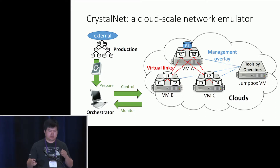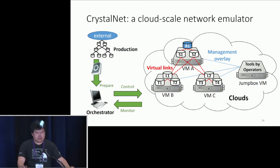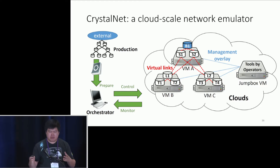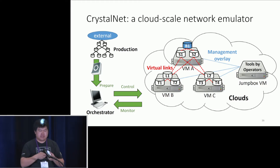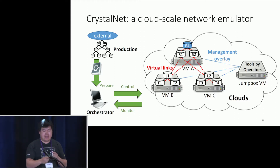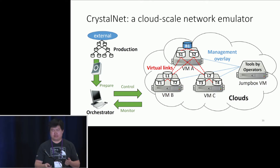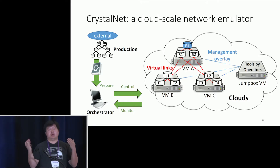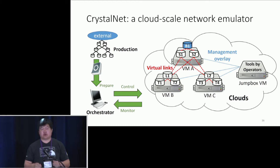This is the architecture of CrystalNet. At the center is an orchestrator that takes information from production and starts tens to hundreds of VMs inside the cloud. On each VM it installs sandboxes of the devices and interconnects them exactly as in production, forming a software version of your production network. It also has a measurement overlay network where you can plug in a jump box and all the measurement tools used in real life, and apply them to the emulated network without any modification.